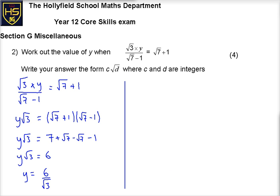So now I want to write it in the form c root d, so I don't want to have a root on the bottom. I want to have a root on the top, so I'm going to rationalize this using some of the skills that we learn in section E. So to keep the value the same, I'm going to times it by 1, but my 1 is going to be root 3 over root 3.